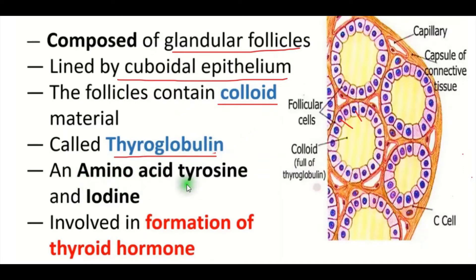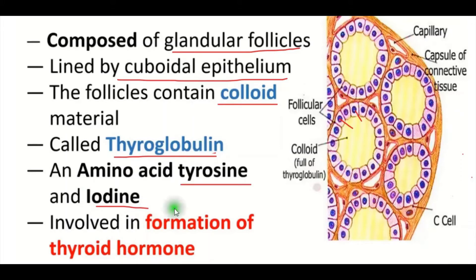An amino acid tyrosine and iodine are involved in the formation of thyroid hormones. So what are the two things involved in the formation of thyroid hormones? Amino acid tyrosine and iodine.